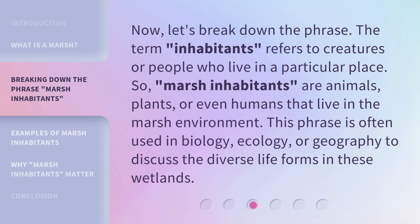Now, let's break down the phrase. The term "Inhabitants" refers to creatures or people who live in a particular place. So, Marsh Inhabitants are animals, plants, or even humans that live in the marsh environment. This phrase is often used in biology, ecology, or geography to discuss the diverse life forms in these wetlands.